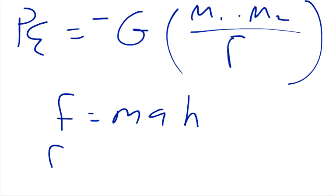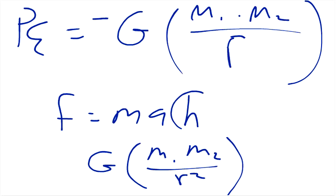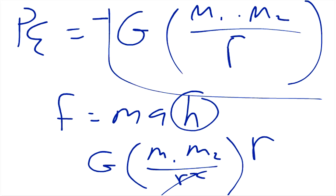And so when you times the equation for gravity, so gravity times m1, m2, over r squared, you times that by the height, then what you get is timesing it by r, and so it just cancels out one of the r's, and so this is potential energy.